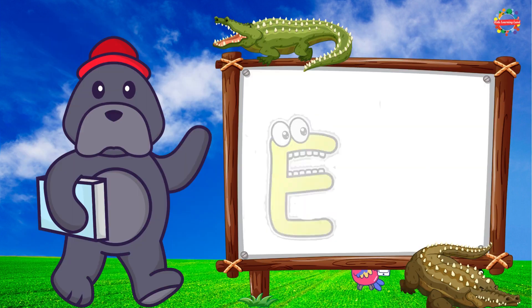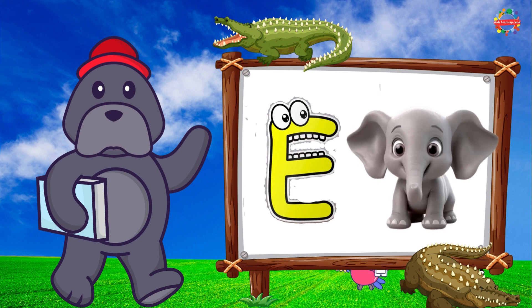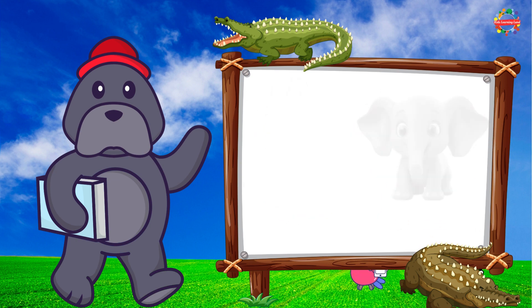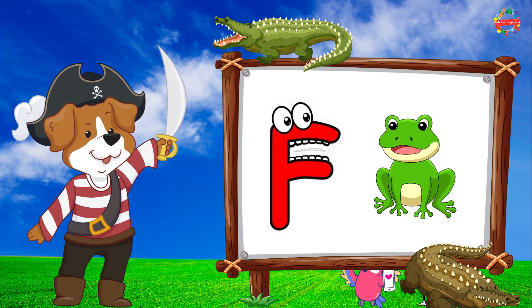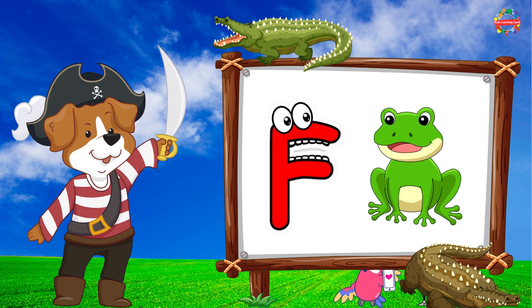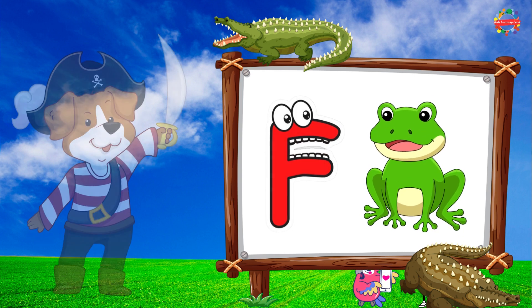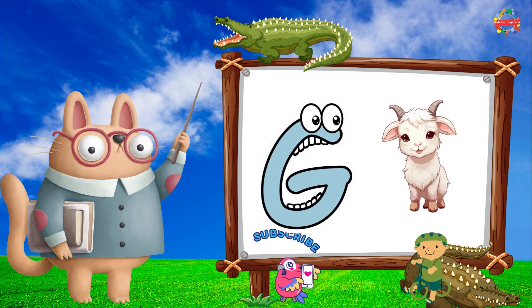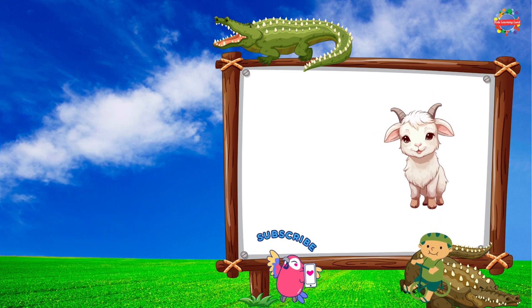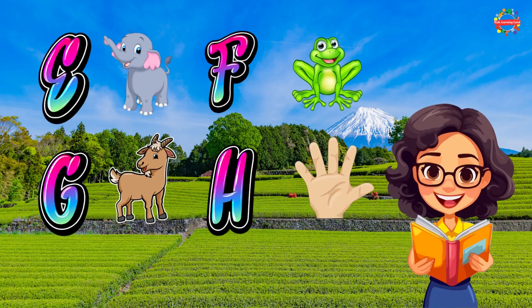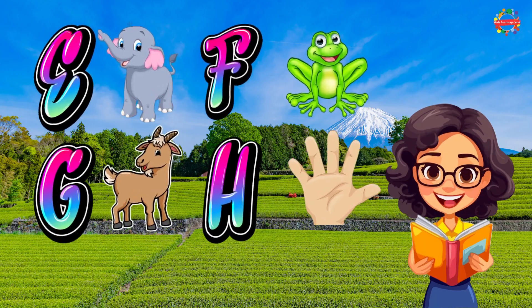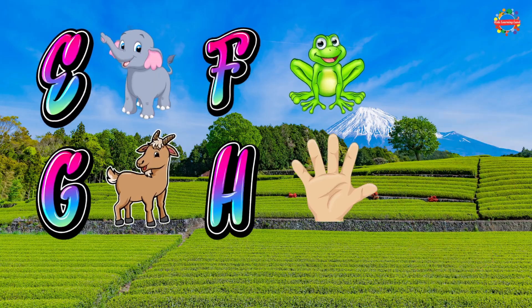E is for Elephant, E-E-Elephant. F is for Frog, F-F-Frog. G is for Goat, G-G-Goat. H is for Hand, H-H-Hand.